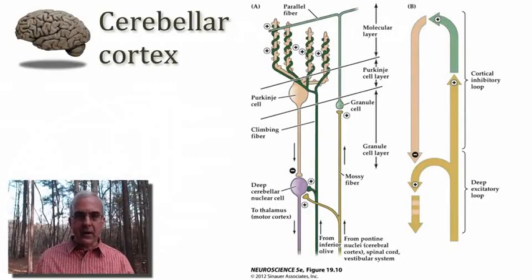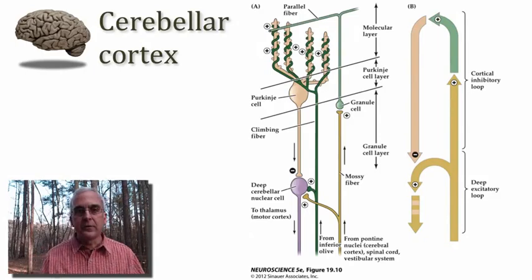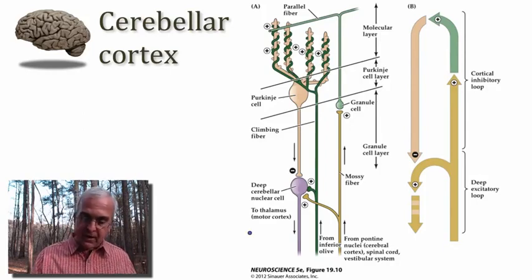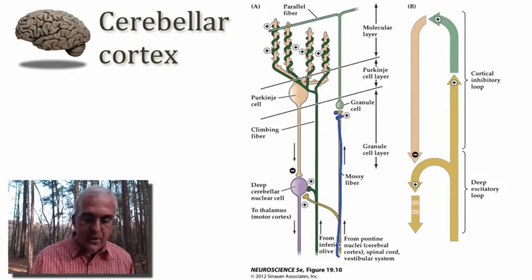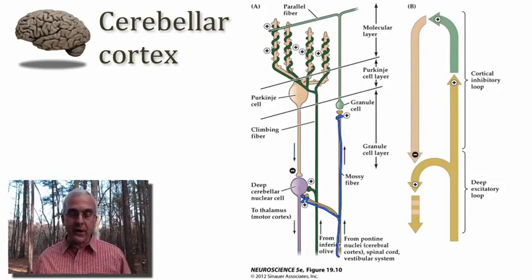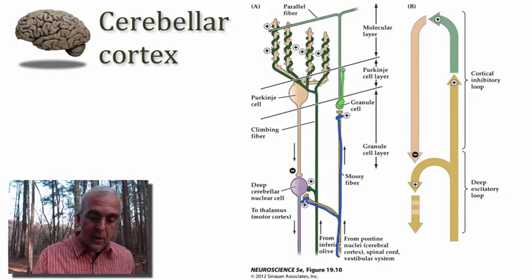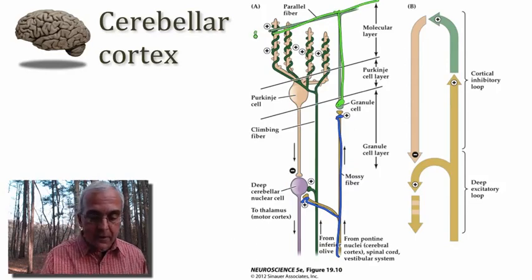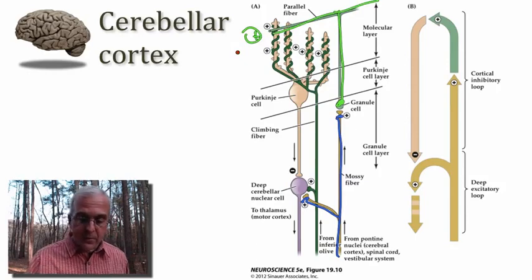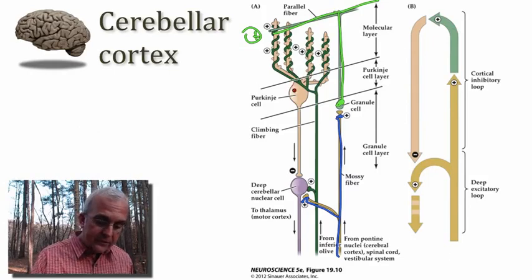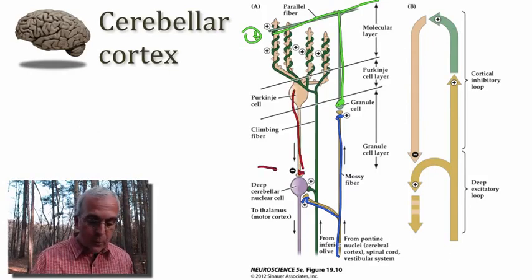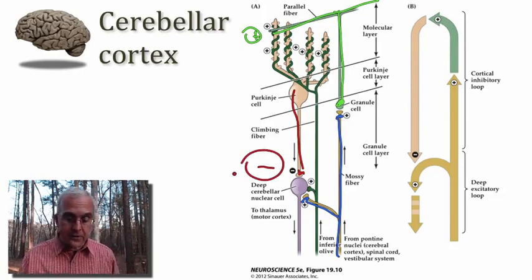Let me take you through this circuitry again in a schematic way to help you understand the nature of the computations going on. The inputs to the cerebellum in the form of mossy fibers make synaptic connections with the granule cells and also send branches down into the deep cerebellar nuclei, releasing excitatory transmitters. The granule cells give rise to long bifurcating axons forming parallel fibers which make synaptic connections with the Purkinje cells. The Purkinje neurons integrate those parallel fiber inputs and send their axons down to the deep cerebellar nuclei where they release GABA onto the deep cerebellar nucleus neuron.